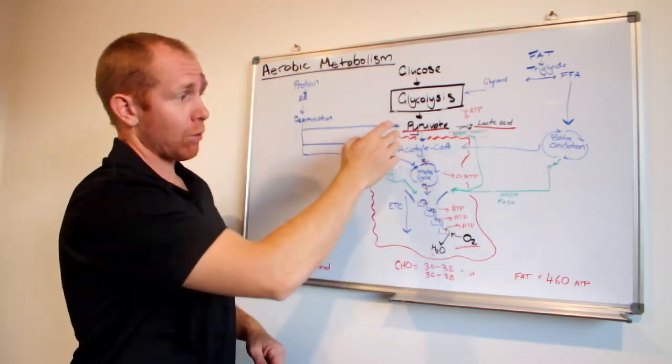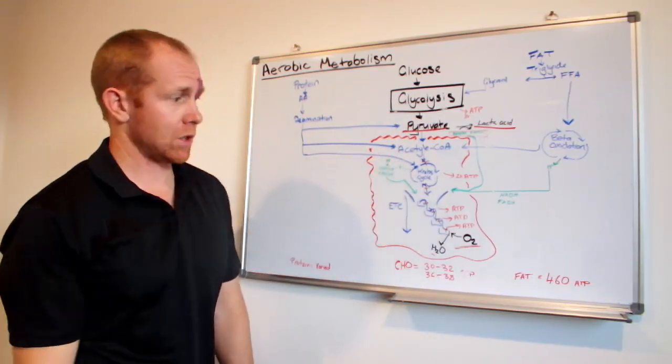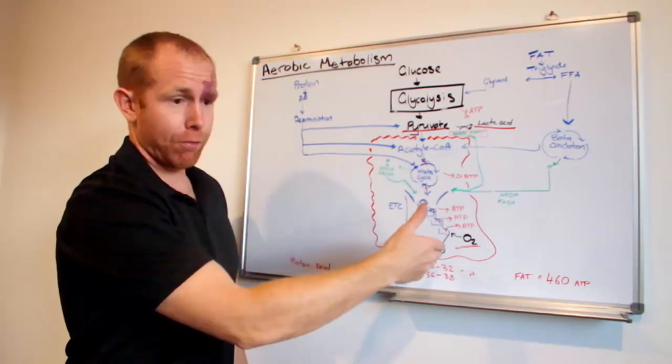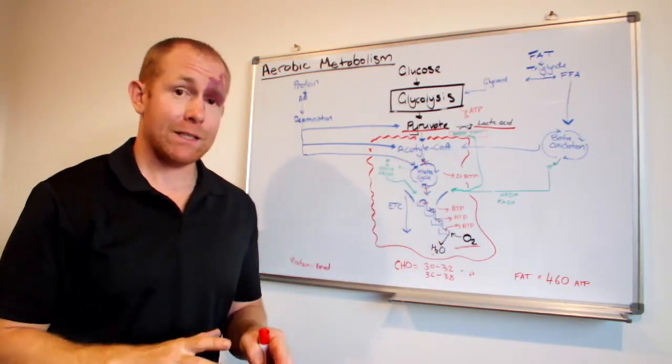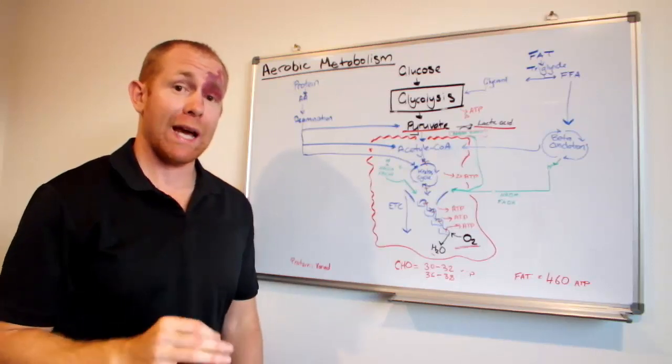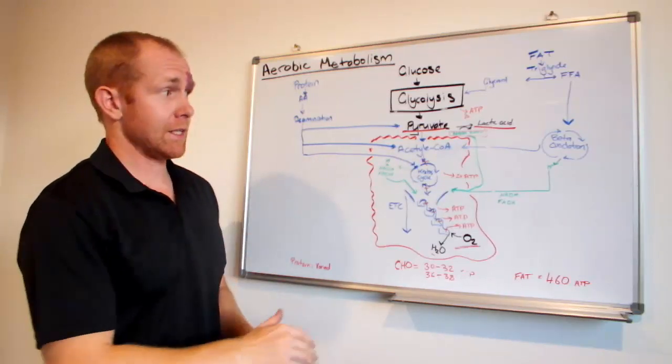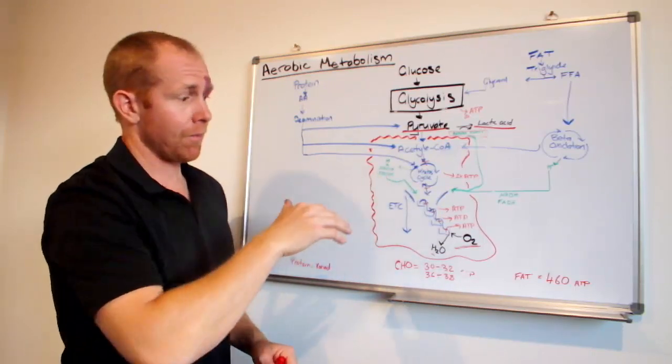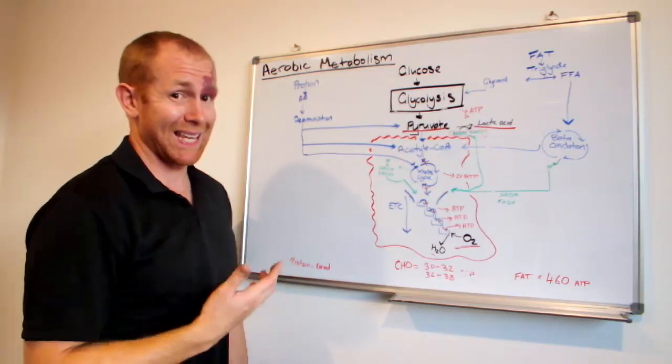Once that's done, we can enter at the pyruvate level, the acetyl-CoA level, or into the Krebs cycle. Flows down through there. And at the end, I've just got down here protein. The amount of ATP that you get out of protein is varied, depending on what amino acid it is, where it enters the cycle, and how it's processed. But it is less than carbohydrate at the end of the day.